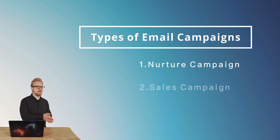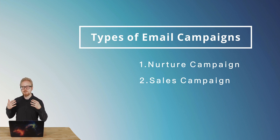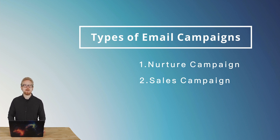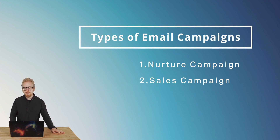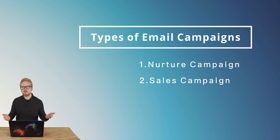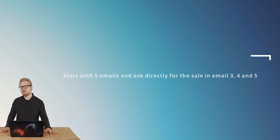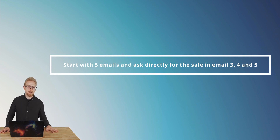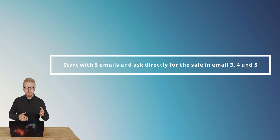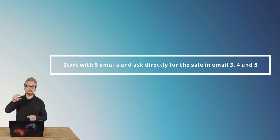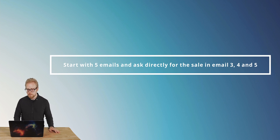The other type of email campaign is a sales campaign. The goal of a sales campaign is to sell, which means you have to ask for the sale. A sales campaign could be three emails, five emails, seven, or even thirty. If you're just starting out, keep it simple — start with five high-value emails. The first couple won't ask for the sale; they'll provide value. Then emails three, four, and five ask for the sale, meaning there need to be call-to-actions in the emails that take them to a sales page. All of that can be built in Kajabi.